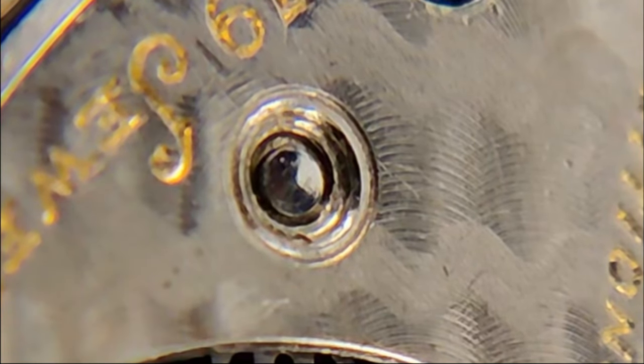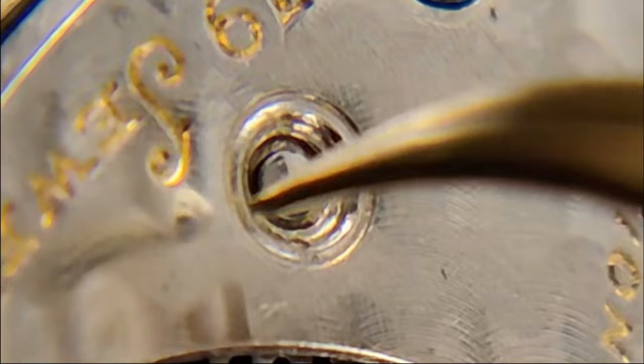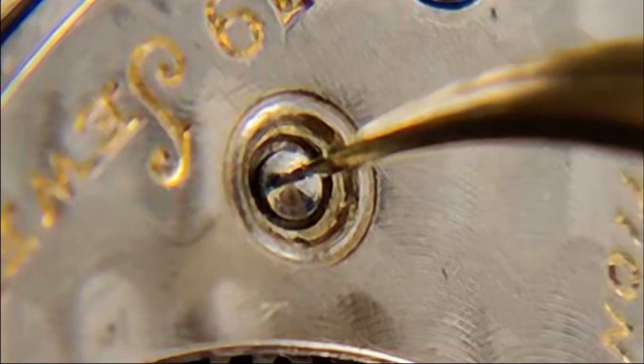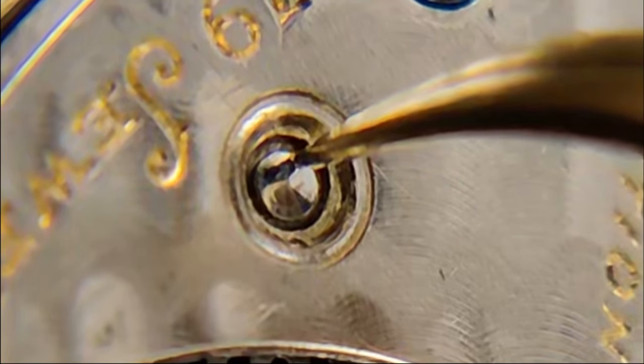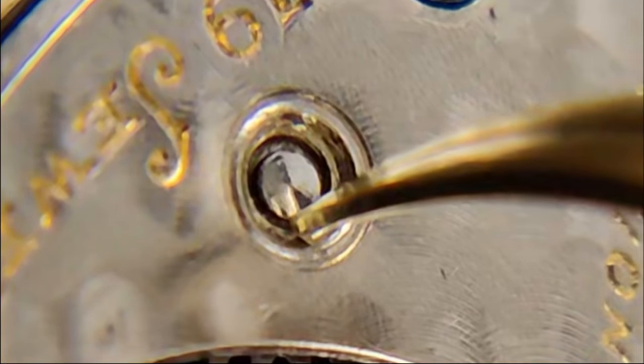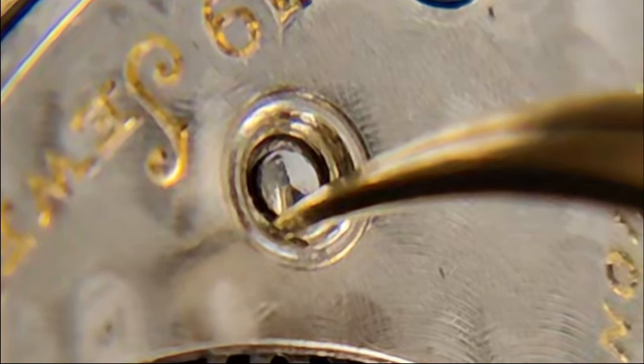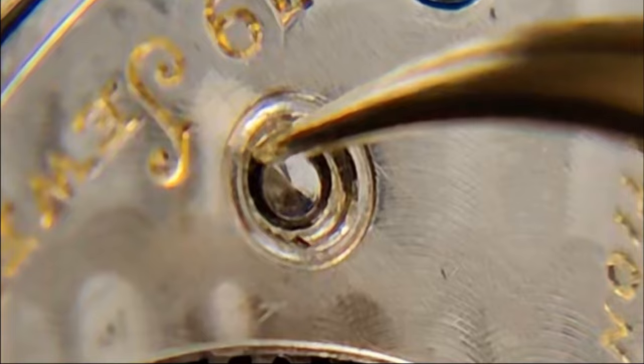So let's test the side shake now. That's great. There's very little movement. And that's what we'd like to see. We wouldn't want to see the pivot moving back and forth. Yeah, this should fix our problem.